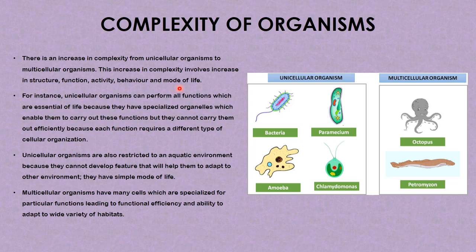Now we'll be looking at the complexity of organisms. There is an increase in complexity from unicellular organisms to multicellular organisms. This increase in complexity involves increasing structure, function, activity, behavior, and mode of life.